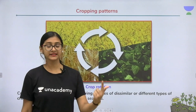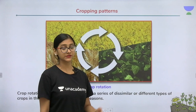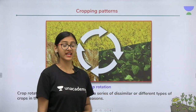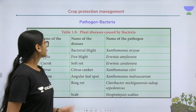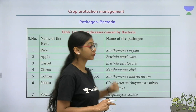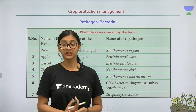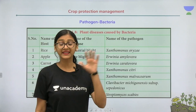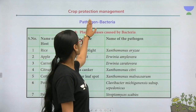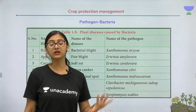So these three — mixed cropping, intercropping, and crop rotation — come under cropping patterns, all of which can increase productivity. We have been discussing this under crop production management. Now coming to crop protection management: it is not enough just to increase productivity, as there are many challenges to growing crops on land.